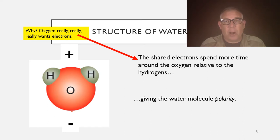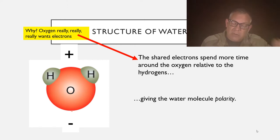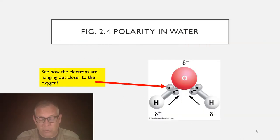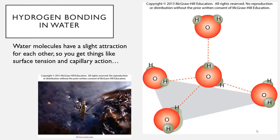Oxygen is very important to your metabolism — that's for another lecture. But at any rate, those electrons spend more time around the oxygen in the water molecule. Here's figure 2.4 from your book showing the same thing — those electrons hugging oxygen tighter, so the oxygen end has a more negative charge and the hydrogen end has a more positive charge. What that causes is that different water molecules are attracted to each other — the positive end of one water molecule is attracted to the negative end of another.